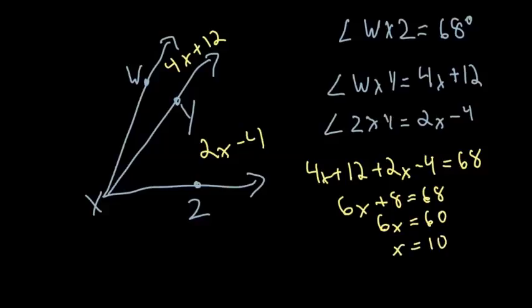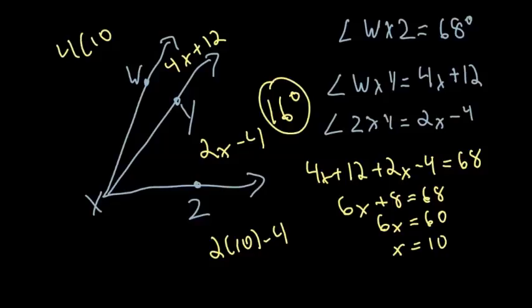Well, we're not done, we just found out what X equals. So we have to put that into the formula to find out what each angle measures. So we have 2 times 10 minus 4, 2 times 10 is 20, minus 4 would be 16. So this is 16 degrees. And the other one would be 4 times 10 plus 12, so that would be 40 plus 12, which is 52 degrees. And then 52 plus 16 would give us our 68.